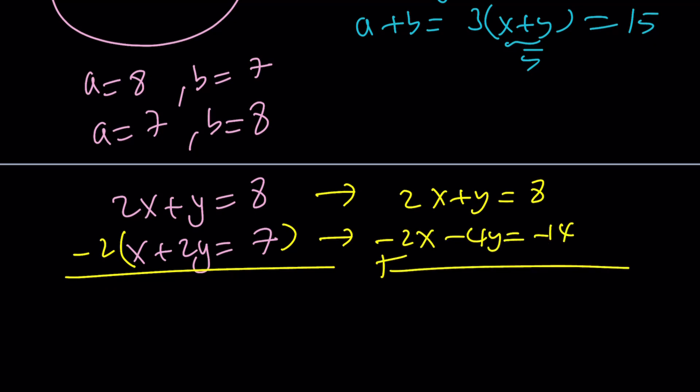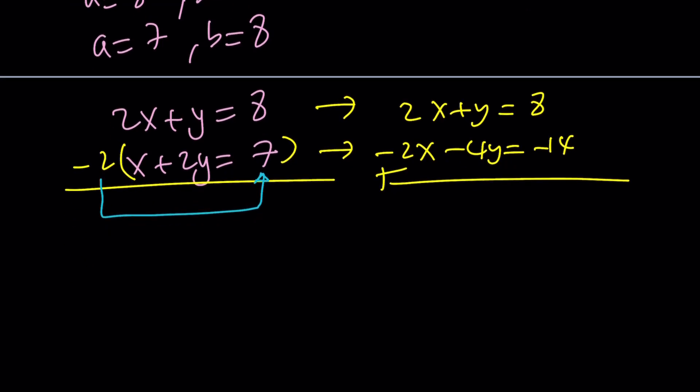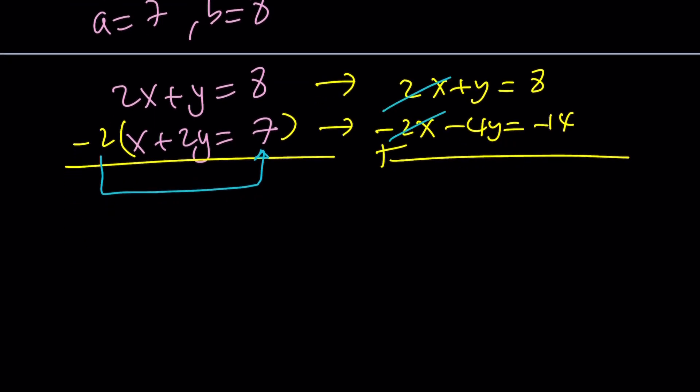This equation is going to be -2x - 4y equals -14. Let me share with you something from high school. When I learned systems, I always forgot to multiply the constant, and I always got it wrong. That's something I experienced before. So from here...